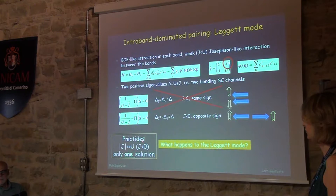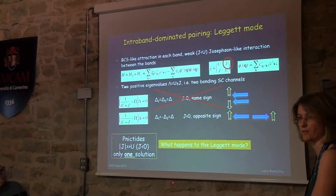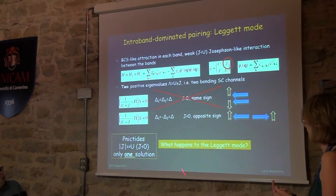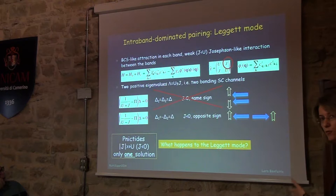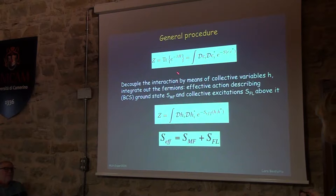The question is what happens when only one solution is present in the system because the pairing is inter-band dominated. If J becomes larger than U, and J is negative as seems to be the case for pnictides, this eigenvalue is now negative so this solution cannot exist. There is only one solution, which drives the system toward the superconducting state, and one asks what is the fate of the Leggett mode. To address this, we follow a general procedure to construct the functional for the collective mode fluctuations below TC. We start from the action written in terms of fermionic variables, then decouple the interaction by means of a Hubbard-Stratonovich field. Since we have two bands, we will have two Hubbard-Stratonovich fields, and then one can integrate out the fermions to get an effective action in terms of only the collective variables.